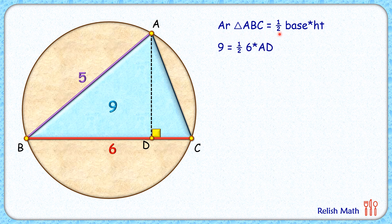So 9 equals half of 6 times AD. Simplifying, we get AD as 3 cm. In this triangle ABD, it's a right angle triangle. Applying Pythagorean theorem where the hypotenuse is 5...